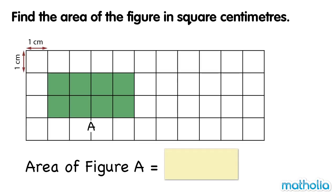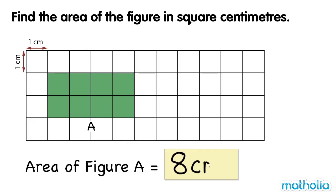The squares that make up this grid have a side length of one centimetre. Each square has an area of one square centimetre. Figure A is made up of eight grid squares. It has an area of eight square centimetres.